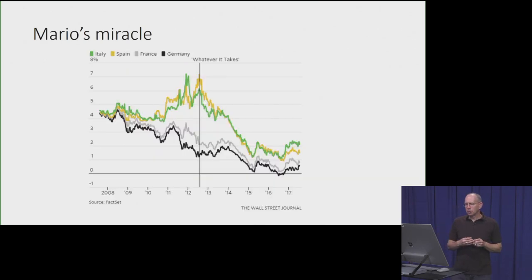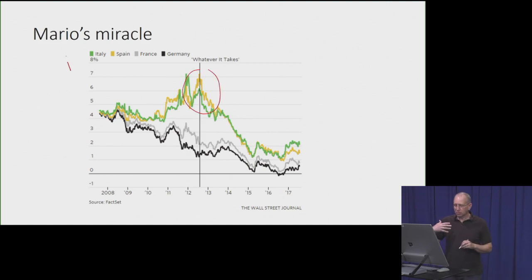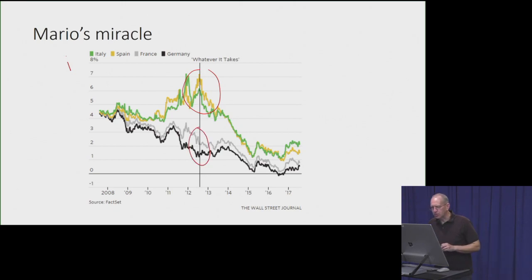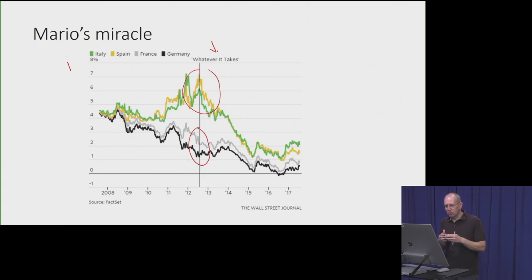Here's a graph showing longer-term government debt interest rates for Italy, Spain, France, and Germany. You can see the interest rates of Italy and Spain — which were having very hard times — were relatively elevated compared to French and German rates. As soon as Mario Draghi gave his speech, interest rates on Italian and Spanish debt fell dramatically. This really improved financial conditions in the Eurozone and improved confidence that the Euro would carry on.